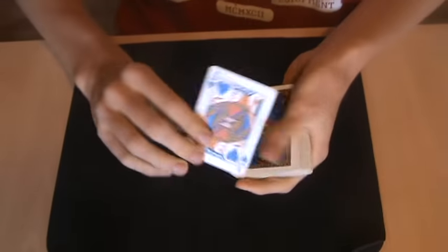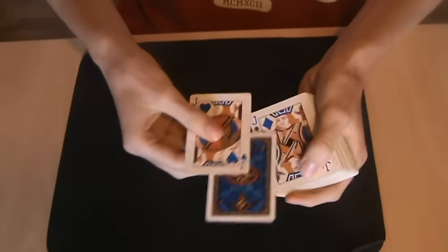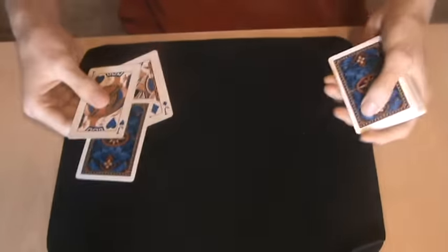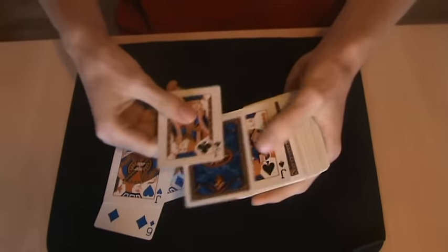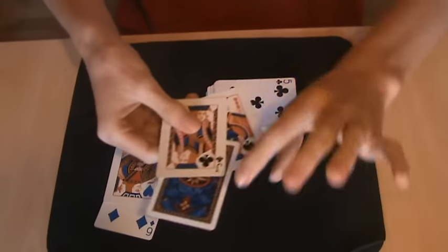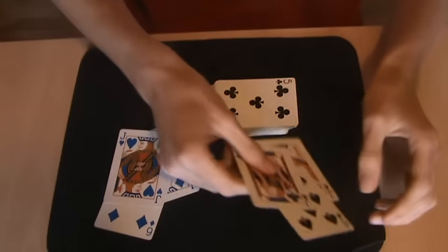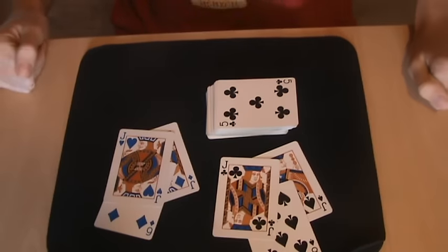I got the Jack of Hearts and not only him but the Jack of Diamonds having a card, and that card is the Six of Diamonds. However, also, the Jack of Clubs and the Jack of Spades appear right over here with the Eight of Spades. And that's the trick.